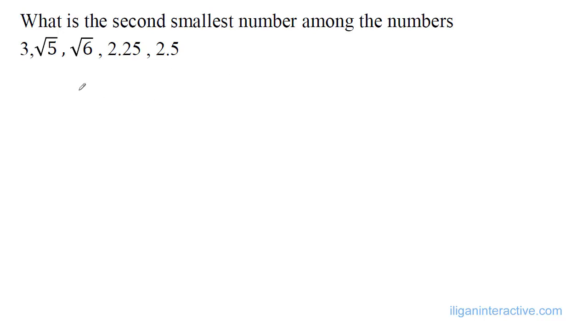If we arrange this from smallest to largest, we can't tell yet, right? Because square root of 5 and square root of 6, it's really hard to find the square roots, especially if you haven't memorized the square roots of numbers. But the easiest way to do this is just to square every number and arrange them.